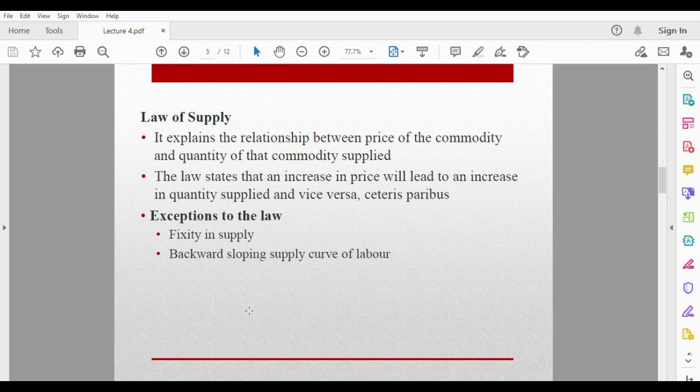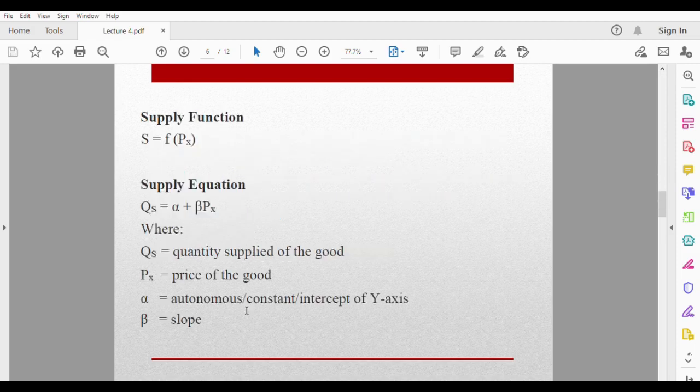Now we move to the supply function. The supply function uses letters to represent all the variables. S here represents supply, f means it's a function of, and Px is the price, assuming the commodity is called x. So the supply function reads: supply is a function of Px. What does it mean? It means that supply depends on price. When price changes, it affects supply.